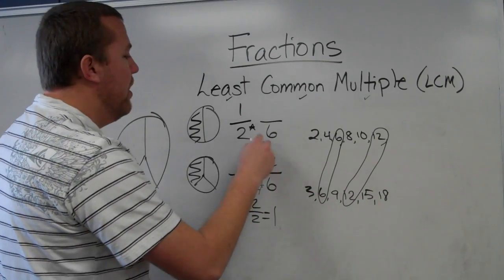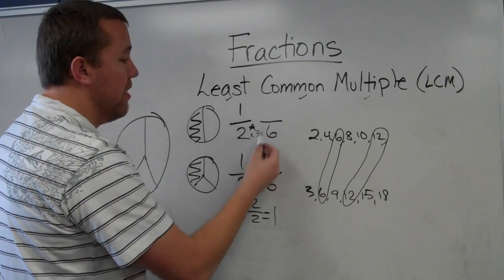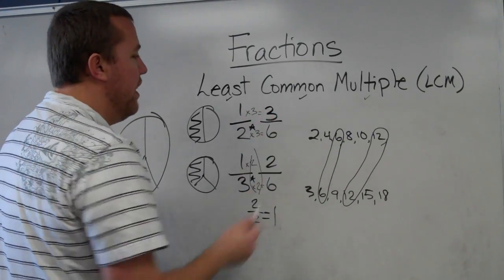We're just going to change how we look at it so that we can compare it. One times two is two. Now, I come up here, two times something, two times three, equals six. I times the bottom by three, so I times the top by three. One times three is three.